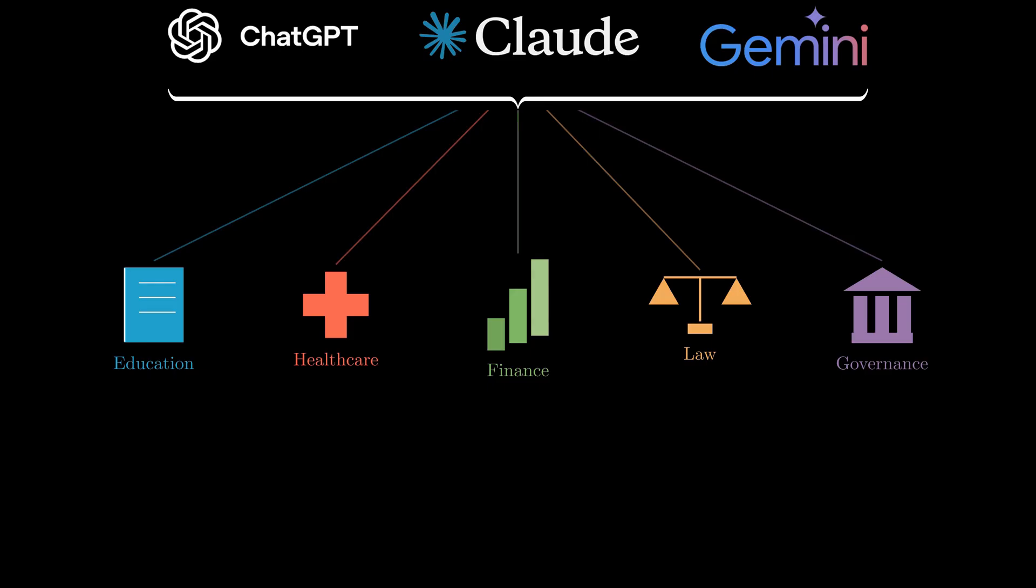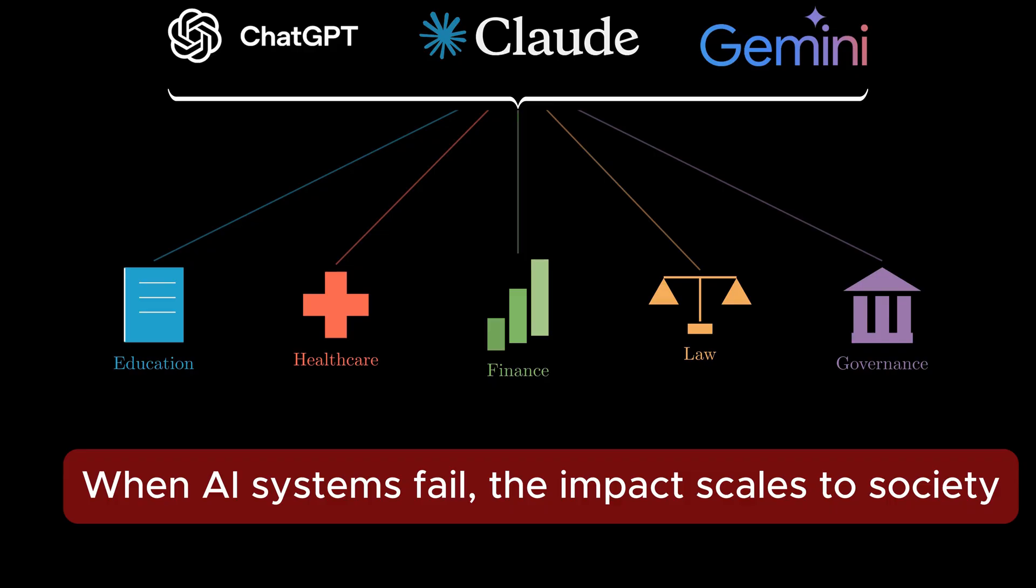Decisions influenced by AI now affect education, healthcare, finance, law, and governance. When an AI system fails, the consequences can propagate far beyond a single-user interaction.